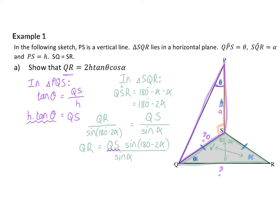And I'm going to realize that 180 minus 2 alpha is a reduction formula for the second quadrant. So, here I'm going to have H times tan theta. And because it's the second quadrant where sin is positive, I can simply write sin of 2 alpha.